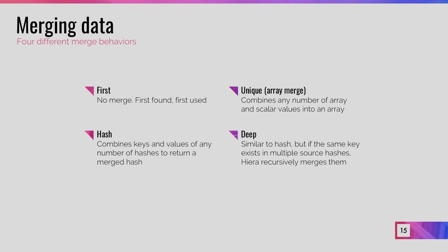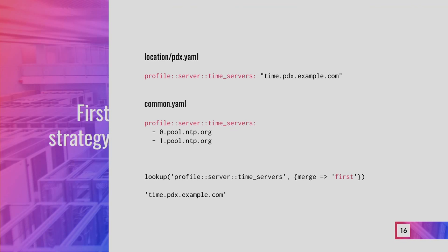If the unique strategy finds something other than arrays or scalars — like a hash — it will break. The last two strategies are specifically for hashes. 'Hash merge' merges all keys and values from hashes found in the hierarchy, but only at the first level — it won't go deeper into children. 'Deep' is recursive: it goes inside and merges all keys and values at every level.